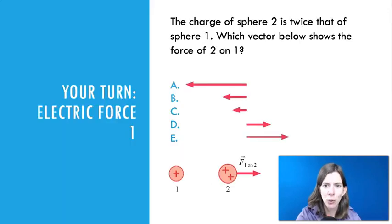So, let's take a look at the two questions. The first one here says that the charge of sphere 2 is twice that of sphere 1. Which vector shows the force of 2 acting on 1? So, this is the doer, this is the receiver. So, this is F2-1 is what we're looking for. What the picture is showing us here is F1 on 2. Which is, using my notation, that would be F1-2. So, we're looking for F2-1. So, think about it. Pause the video for a second.